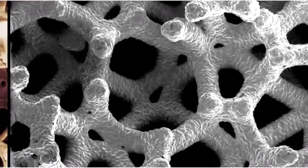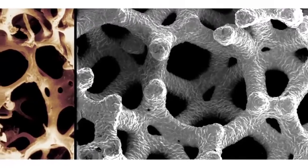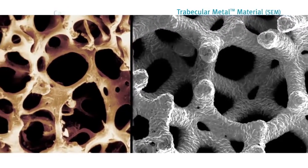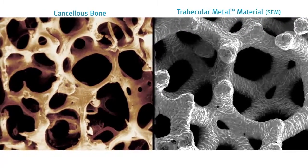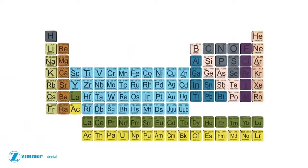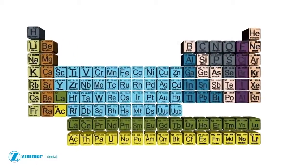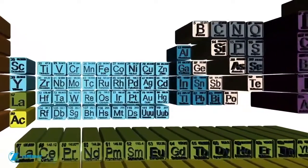Trabecular metal technology is a three-dimensional material, not an implant surface or coating. Its structure is similar to cancellous bone. Trabecular metal material is made of tantalum, element number 73 on the periodic table.